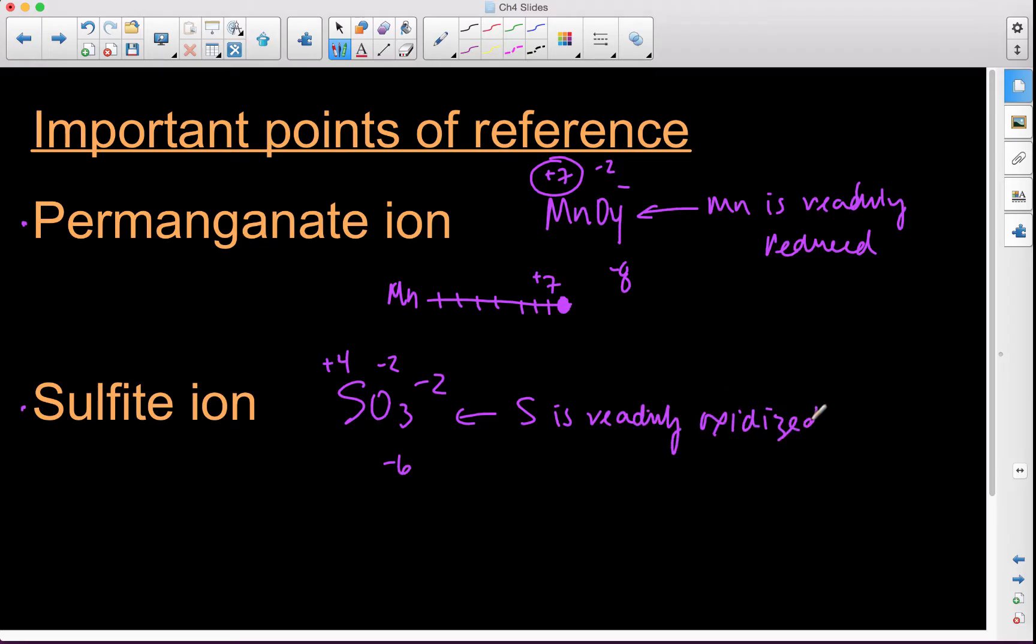So the sulfur is readily oxidized. That means if we think about sulfur and we think about a spectrum, 1, 2, 3, 4, if we are here, sulfur actually prefers to be over here. Which means that sulfur is readily oxidized.